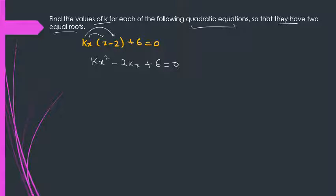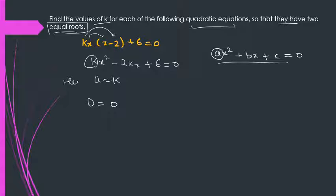How? By expanding it to kx² - 2kx + 6 = 0. Now, if roots are equal, which is the condition given in the question, that means D will be zero. D is what? Discriminant in the quadratic formula. So now if we compare this with standard quadratic equation form, which is this, you will find that with x², it is a here. Here it is k. So a is k.